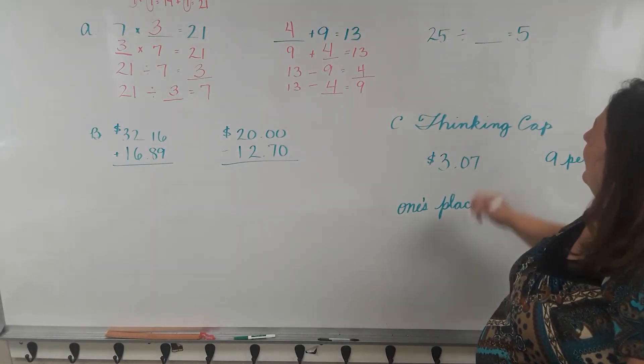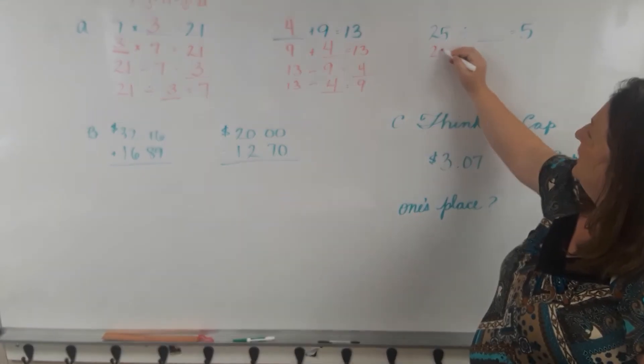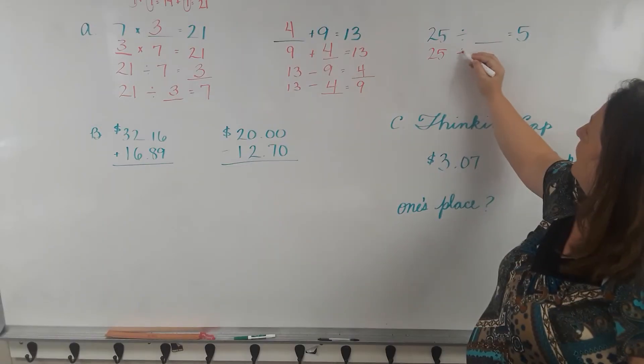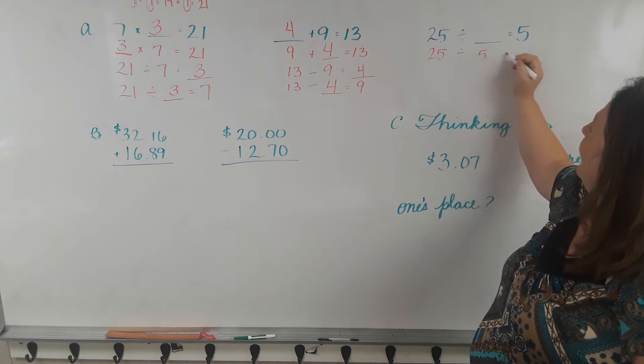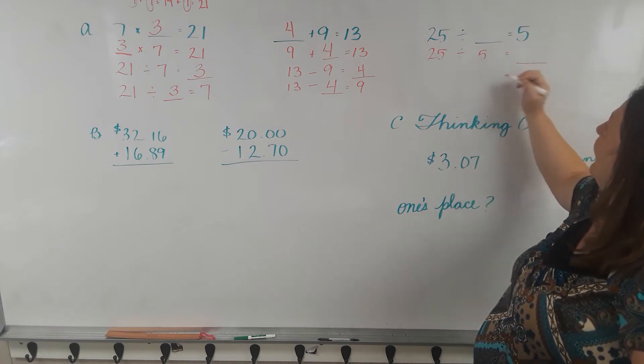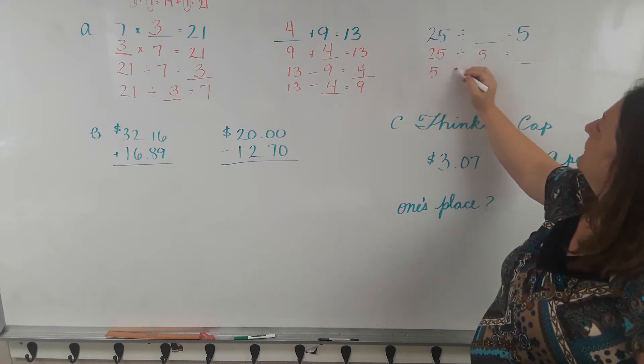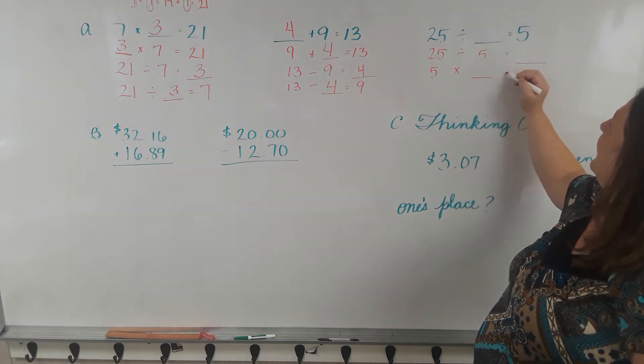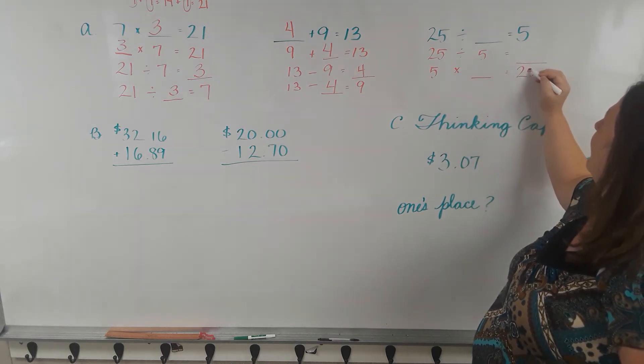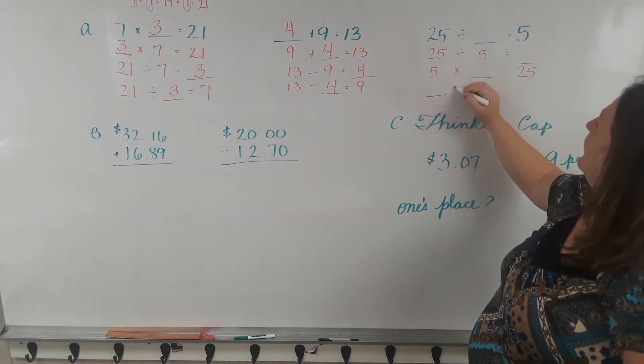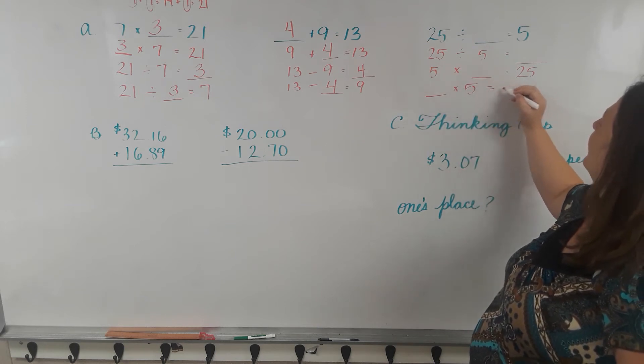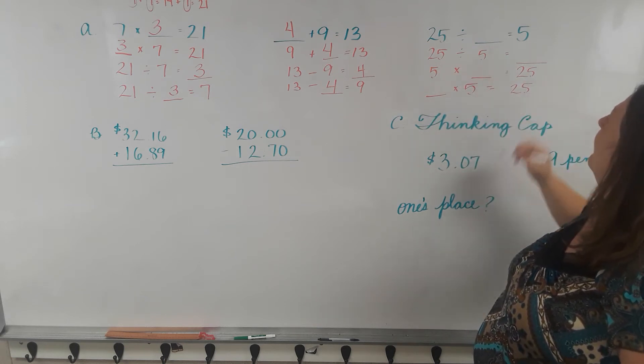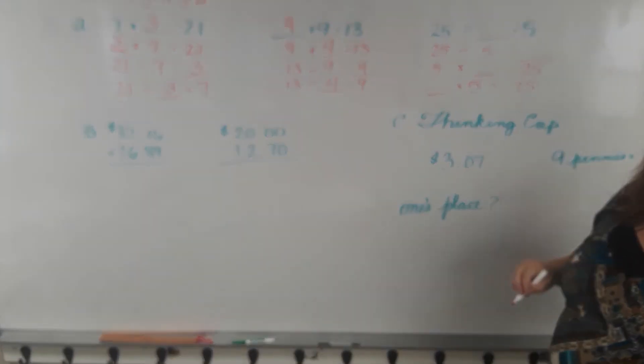25 divided by 5. 25 divided by a number equals 5. Let's do the other division: 25 divided by 5 equals a number, and then 5 times a number equals 25, and a number times 5 equals 25. So what is 25 divided by 5?